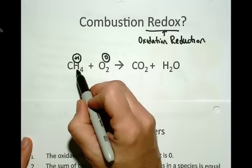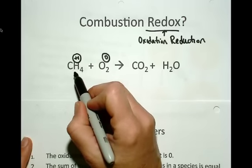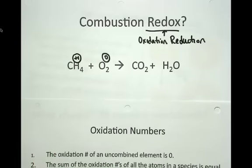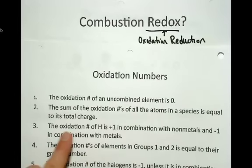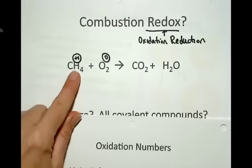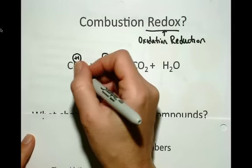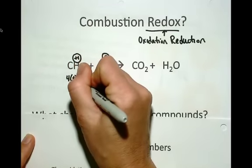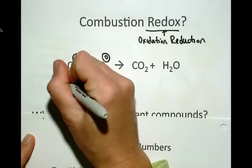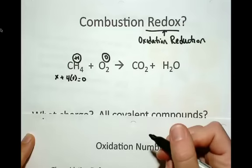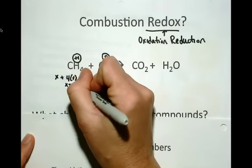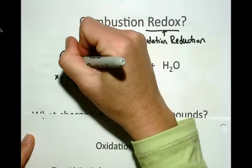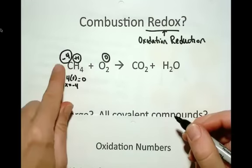Now there are four hydrogens each with plus one. Carbon can have many different oxidation numbers depending on what it's paired with. Here it's paired with four hydrogens. The rule is that the sum of oxidation numbers of all atoms in a species equals its total charge. The total charge of methane is zero. So if I have four plus ones from hydrogen, letting X be carbon: X + 4(+1) = 0, so X equals minus four. The oxidation number of carbon in methane is minus four.